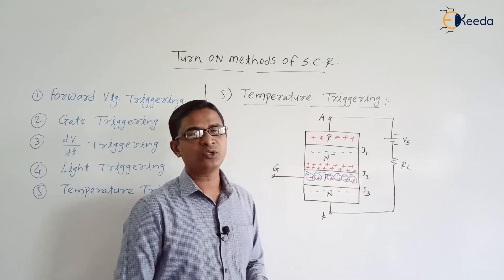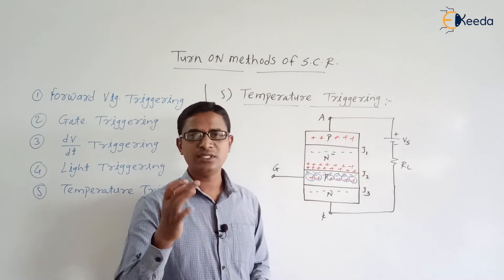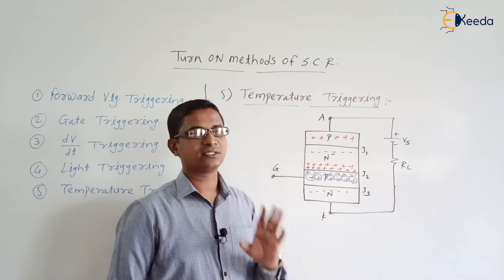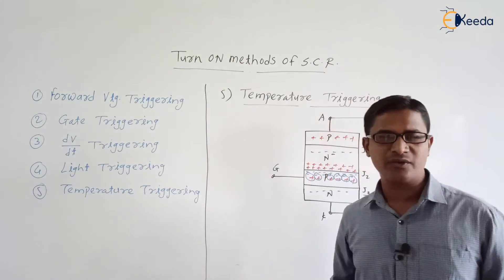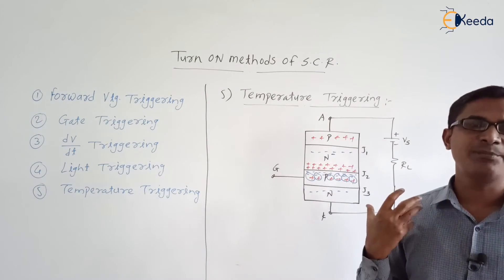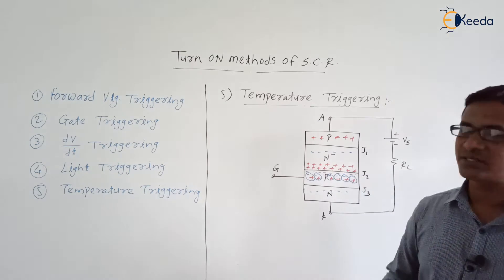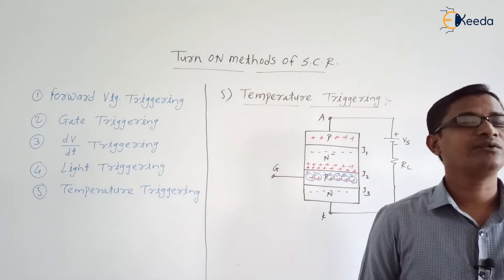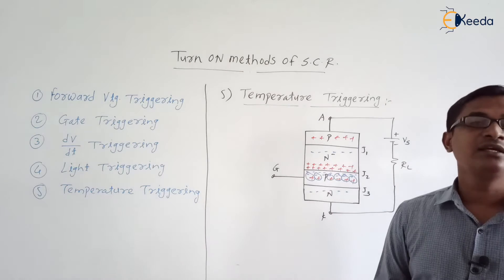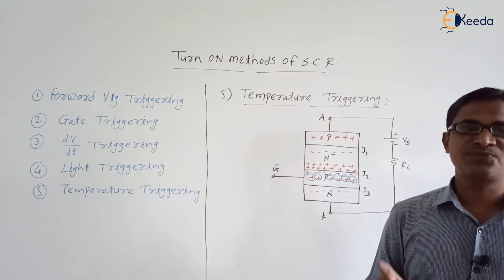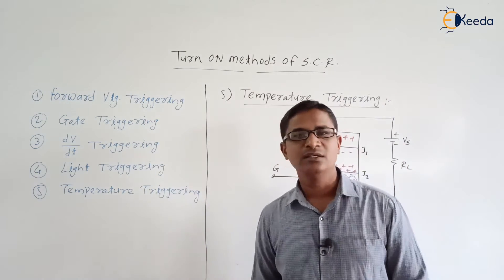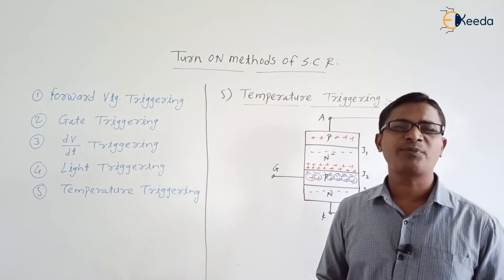This helps in reducing the width of the depletion layer across junction J2, and it helps in turning on the SCR. This is nothing but temperature triggering. When the temperature increases, there will be the generation of additional charge carriers in all four layers. In light triggering, the beam of light strikes at the recess, which is provided at the inner P-type layer only. So in both methods, the effect of light and effect of temperature we have considered.